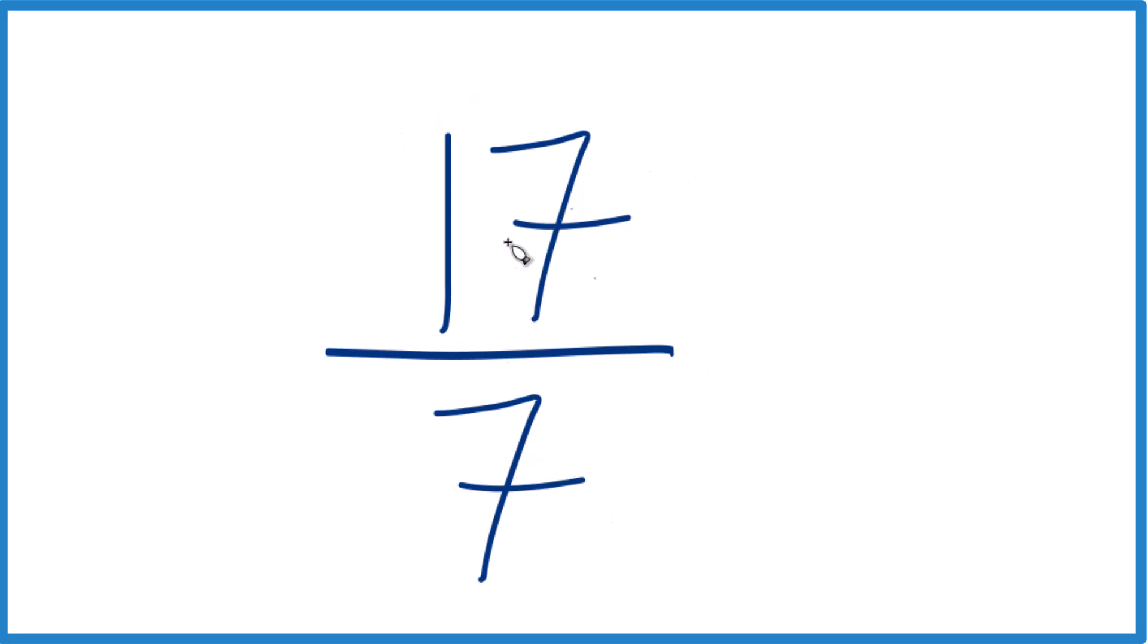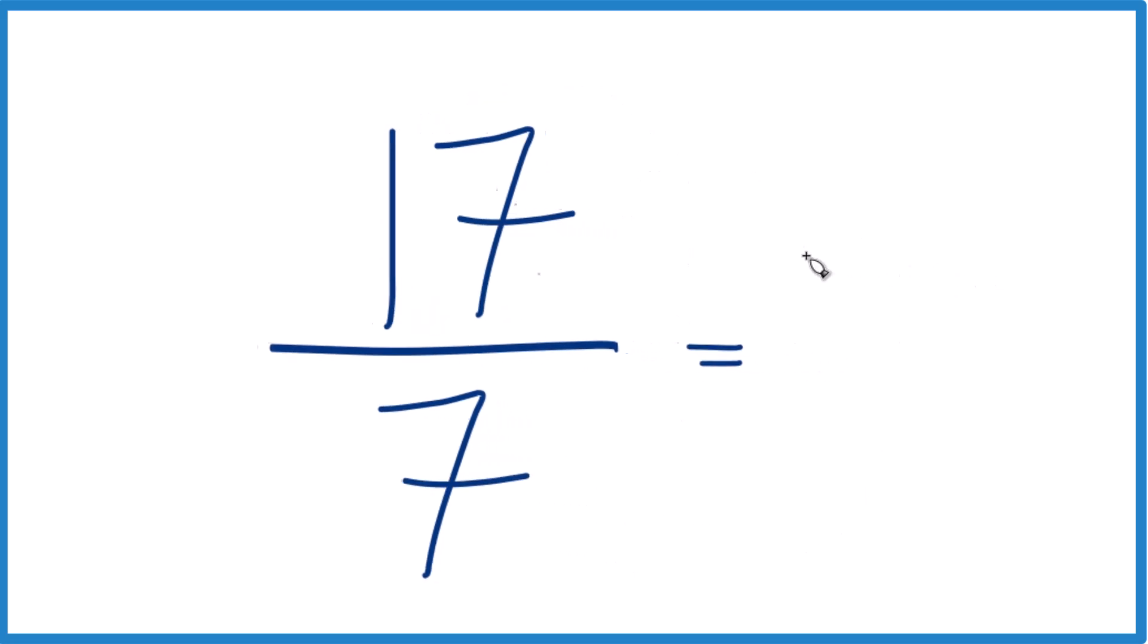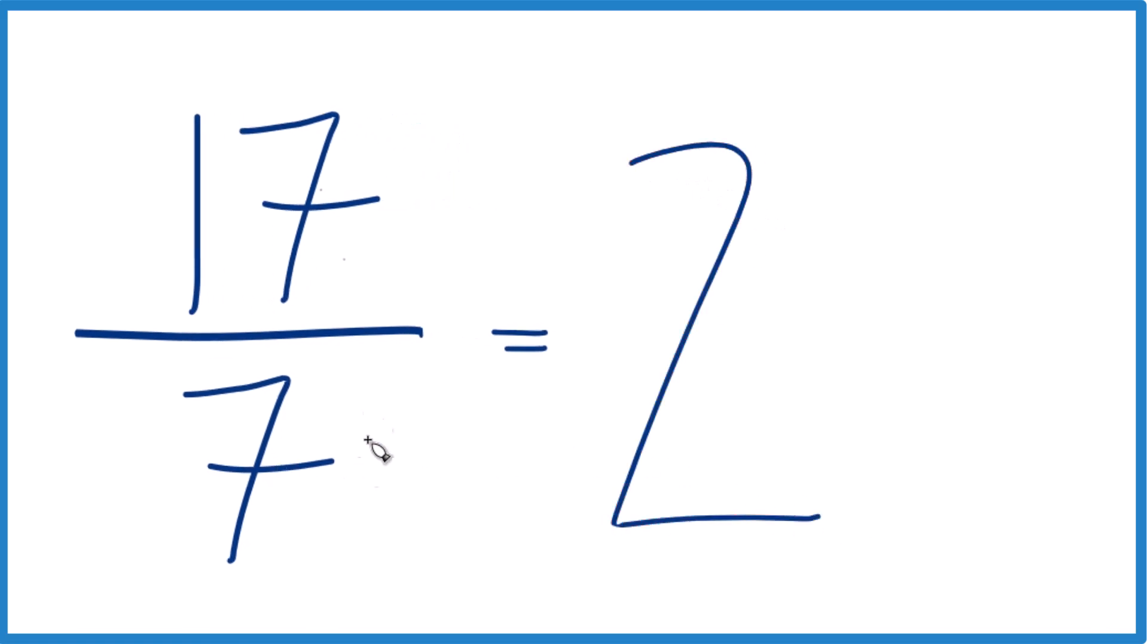7 goes into 17, let's see, 2 times 7, that's 14, and then we'd have 3 left over, bring the 7 across.